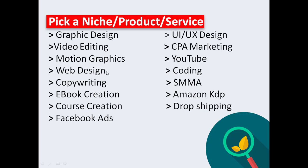Then you have web designing where you create websites for businesses. You have copywriting — this is something every digital marketer needs because you can't do it without writing copies. Copywriting is all about putting together words to pass a message, to sell a product, or to reach out to an audience in a creative way through written words. Then you have ebook creation. If you know how to create ebooks, you can put that process into another ebook and sell it, or put it in the form of a course, or in a mentorship group where you mentor people on how to create ebooks and make money from that.